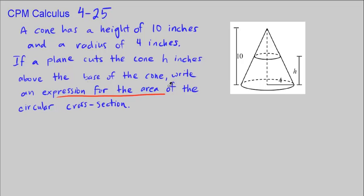Write an expression for the area of the circular cross section. So we know that the area of this cross section is just the circle, so the area of a circle is pi r squared.